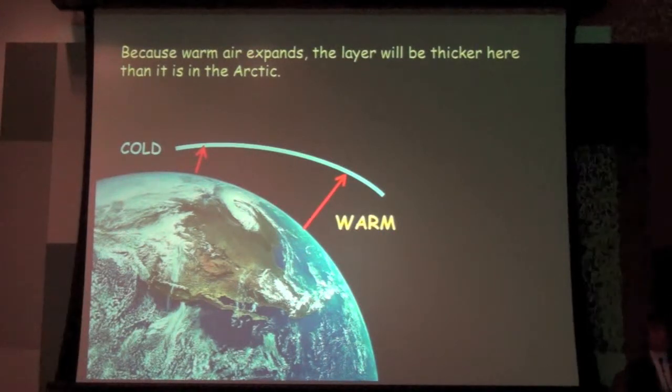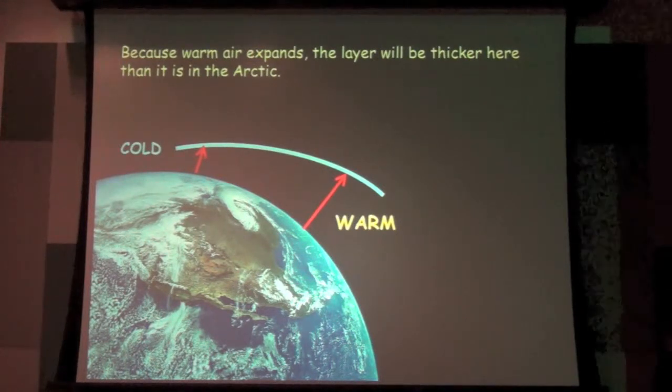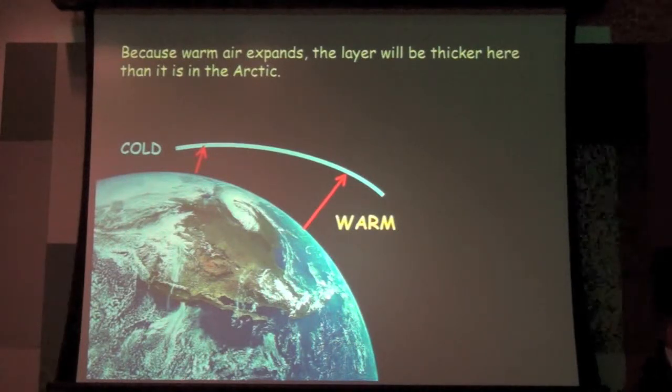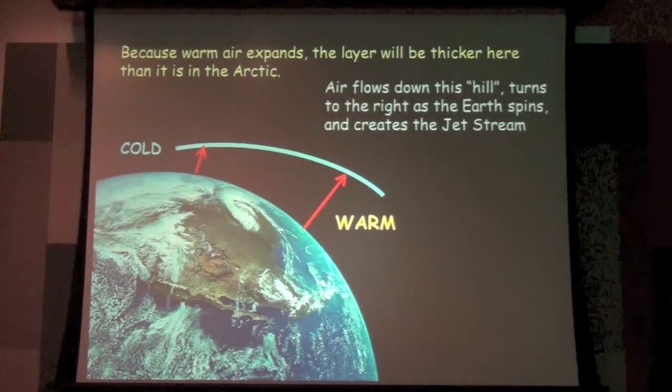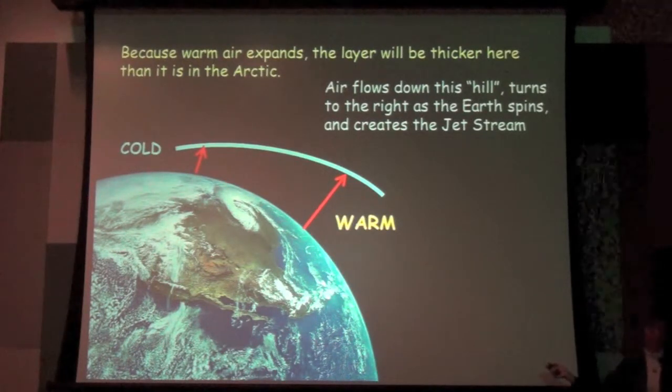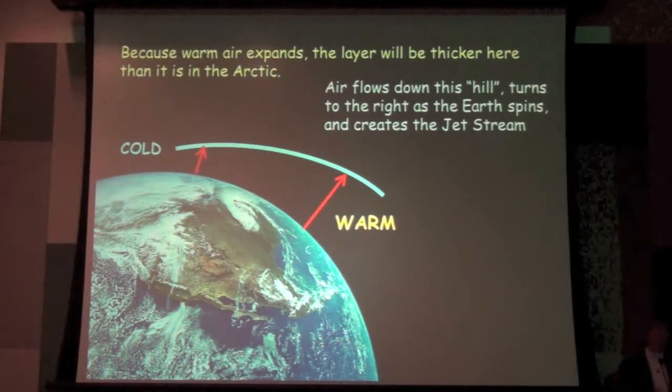This creates a wind starting and blowing from south to north. But because the earth is spinning that wind gets turned to the right and this creates what we call the jet stream. It's this fast-moving river of air high over our heads that encircles the northern hemisphere created by this hill in the atmosphere.